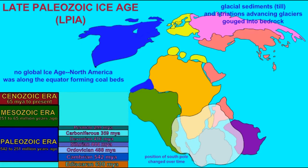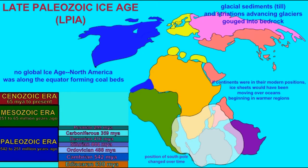They affect southern South America, South Africa, India, Australia, and are also present on Antarctica. If these continents had been in their modern positions throughout time, ice sheets would not have been expected here. They would not have been expected to move over oceans and then begin in warmer regions. There was certainly no global ice age at the same period.